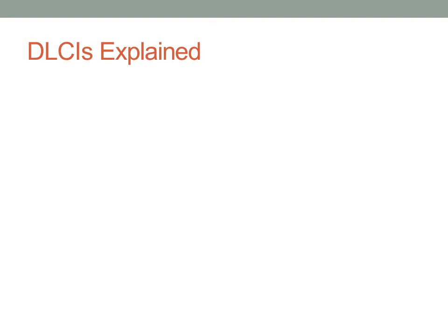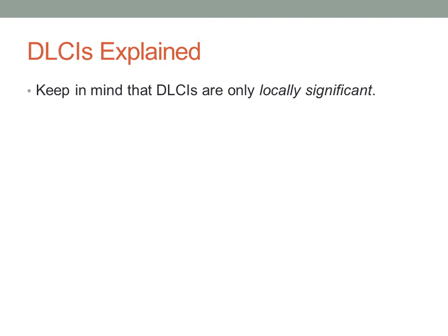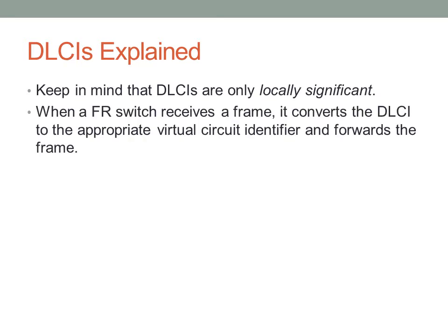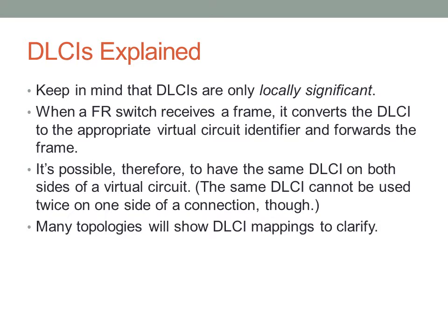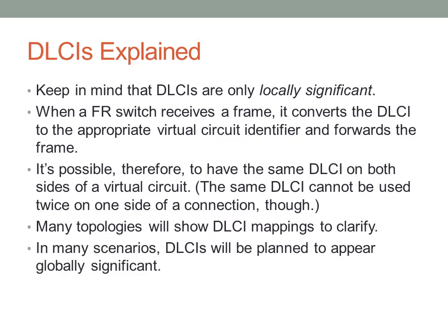DLCIs are locally significant — the other side doesn't care what your DLCI is. The DLCI is only used by the telco to send you to the right place. When a Frame Relay switch receives a frame, it converts the DLCI to the appropriate virtual circuit and forwards the frame based on that. You could have the same DLCI on both sides of a circuit; a DLCI is not globally unique like an IP address. You can't use the same DLCI on the same side of a connection, but DLCIs on two different sides can share the same value. Many topologies plan DLCIs to appear globally significant so you don't have to worry about this.